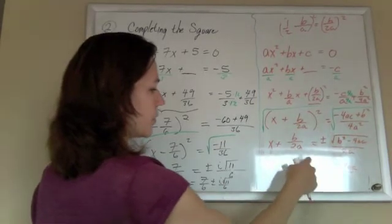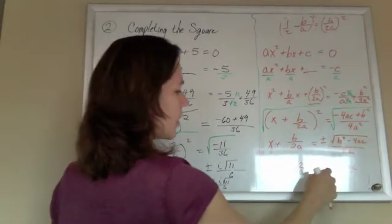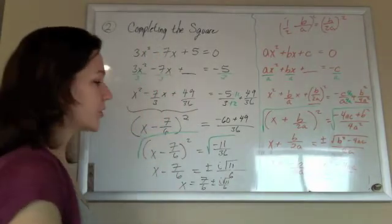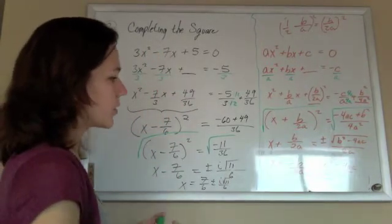We have x equals negative b, plus or minus the square root, b squared minus 4ac, all over 2a. It is gorgeous.